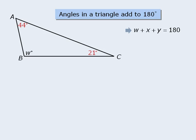So in this particular example, we know that w plus 21 plus 44 must equal 180. We can solve for angle w by simplifying the left-hand side, and then subtracting 65 from both sides to see that angle w is 115 degrees.